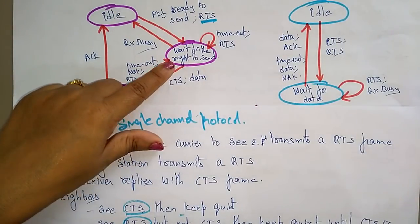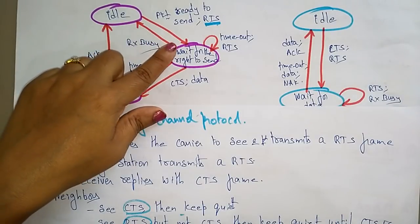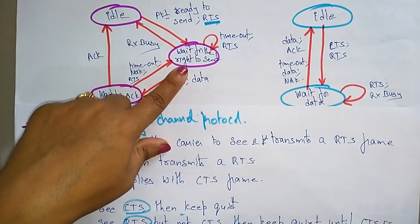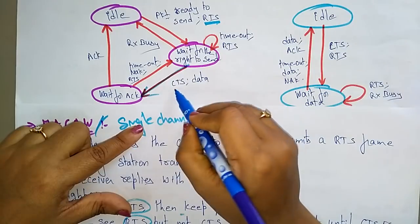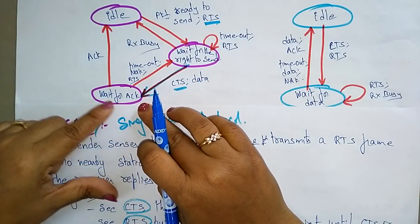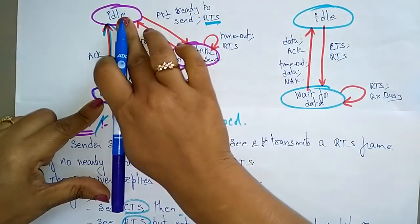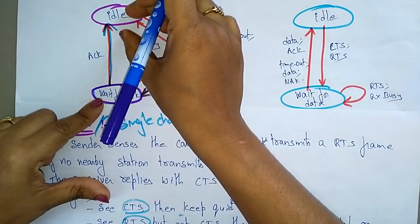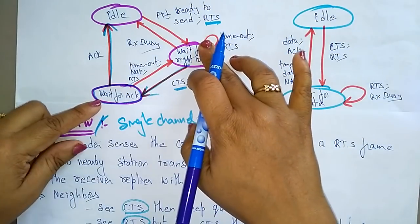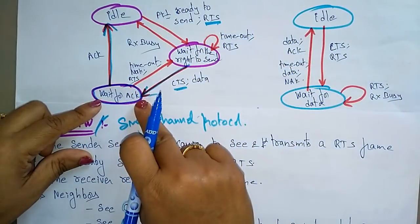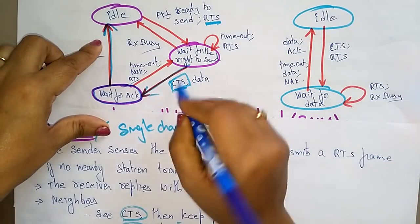The sender waits because it needs to receive the Clear to Send message from the receiver before sending. Once the sender sends the RTS and waits for the right time, it means waiting until CTS is received. When the CTS is received by the sender, it acknowledges and starts transmitting the data. So the sender performs two operations: wait for the right to send, and wait for the acknowledgement.